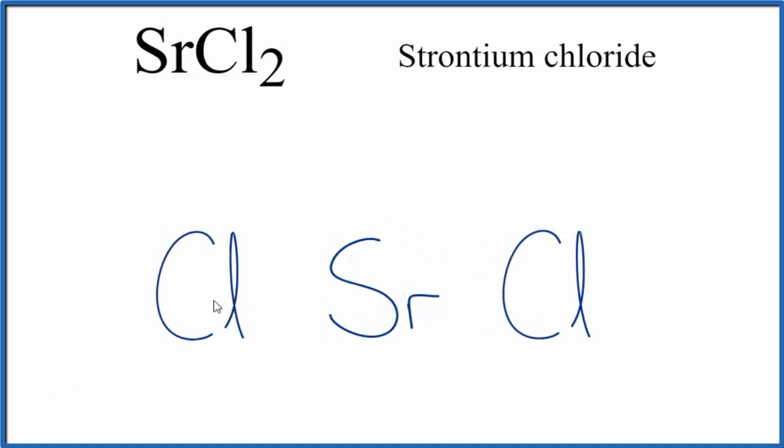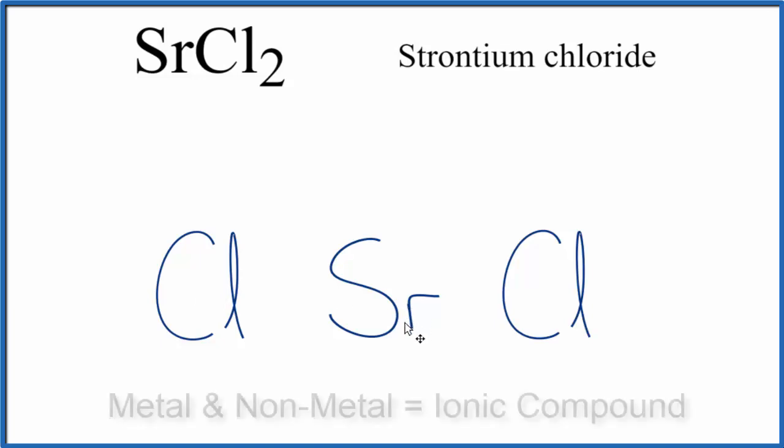Strontium, that's a metal, and then chlorine, that's a non-metal. So we have a metal bonded to non-metals, that gives us an ionic compound.